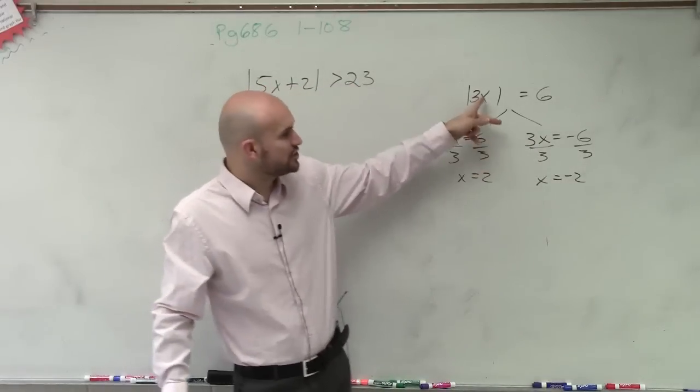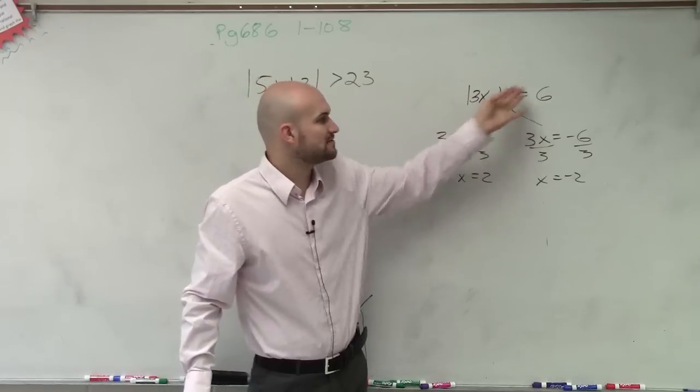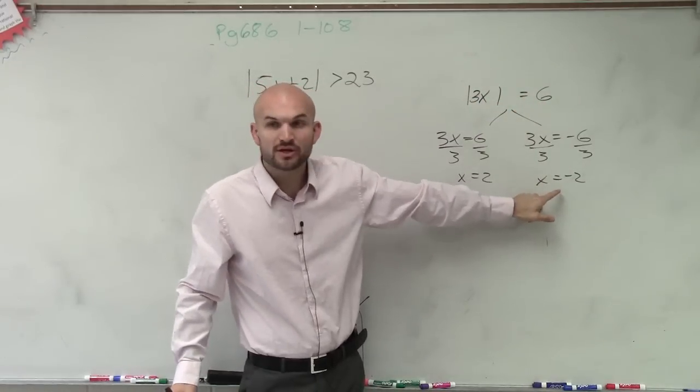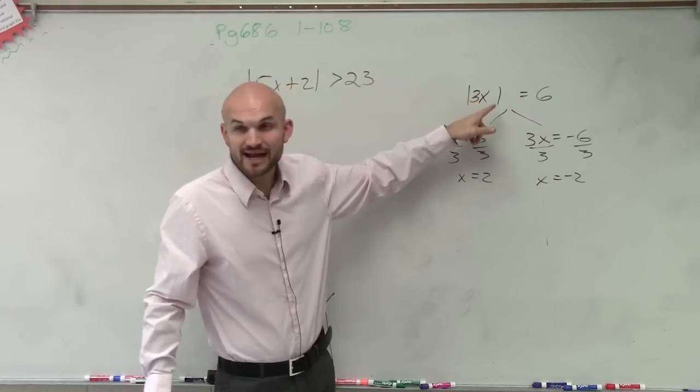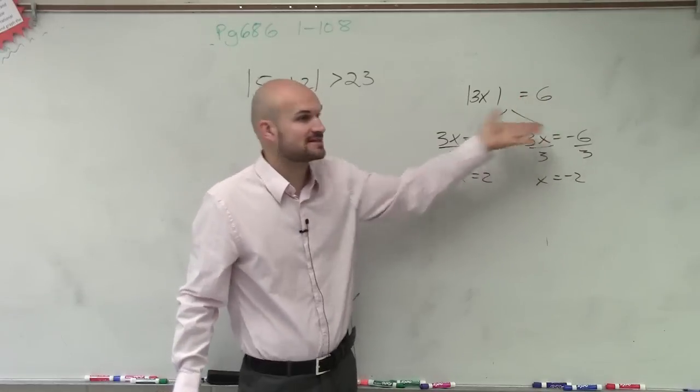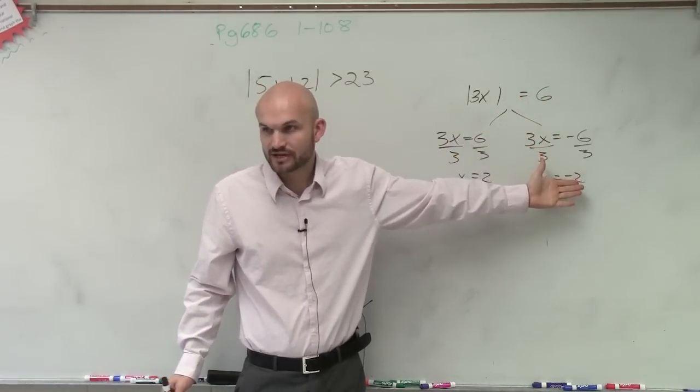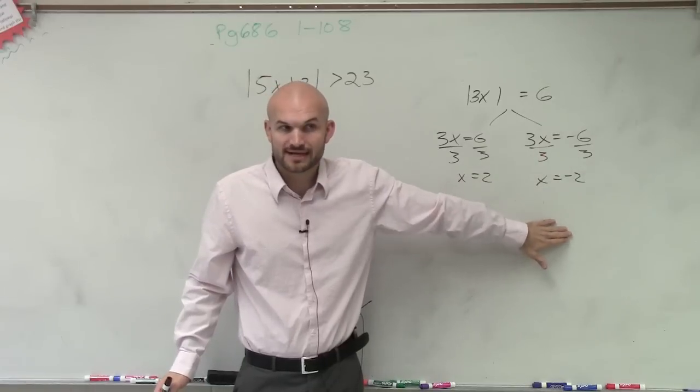Now, if I plug in a 2 for x, that's 3 times 2, which is 6, absolute value of 6 equals 6. And then when I plug in negative 2, 3 times negative 2 is negative 6. The absolute value of negative 6, though, is also 6. That's why we have two different versions of this. Does that make sense? So there's two different answers, right?